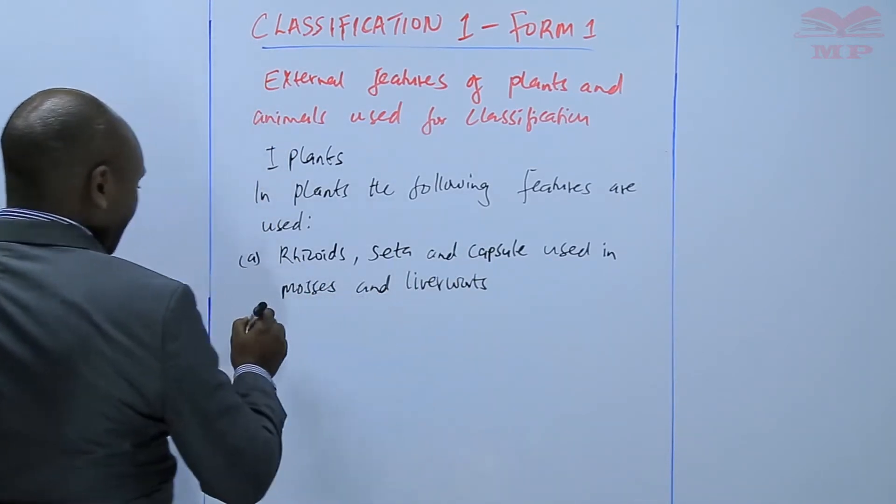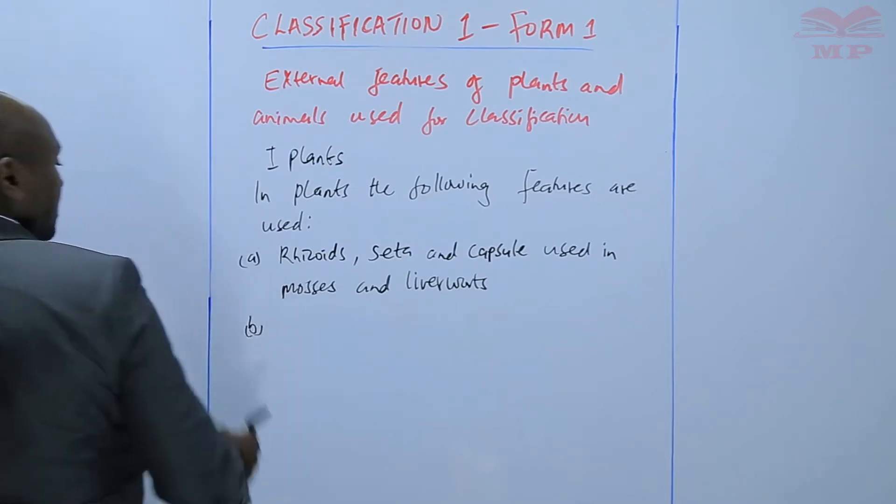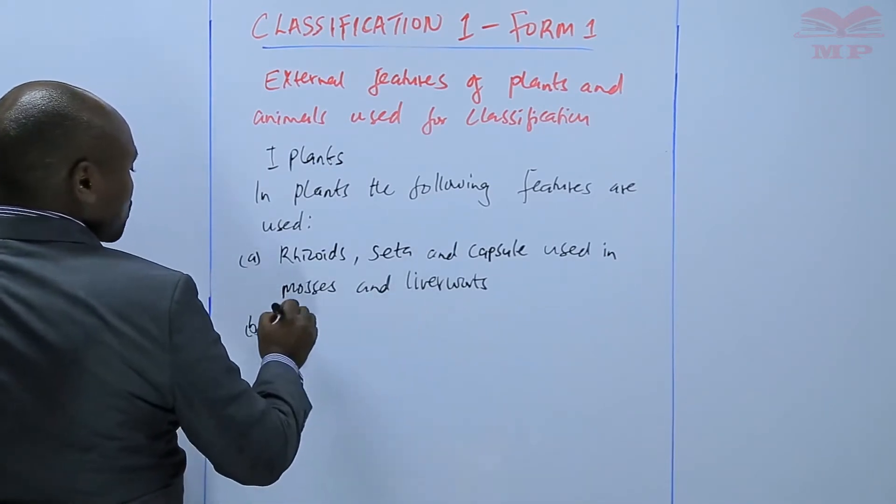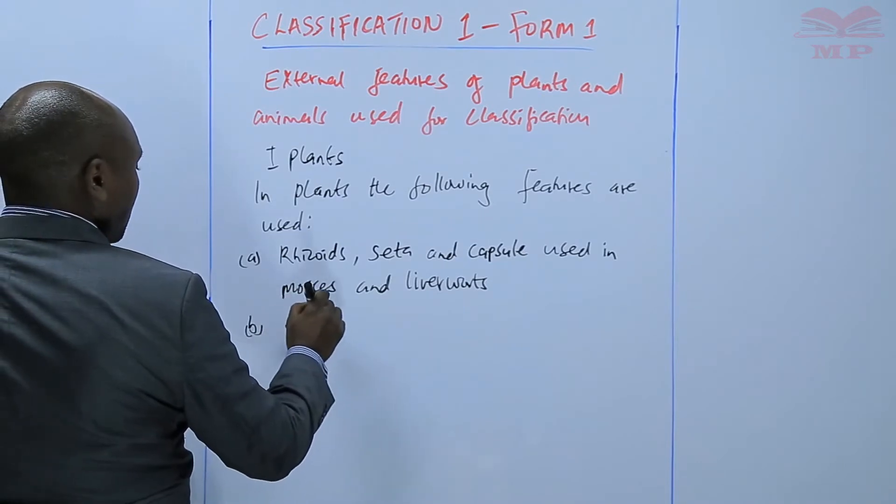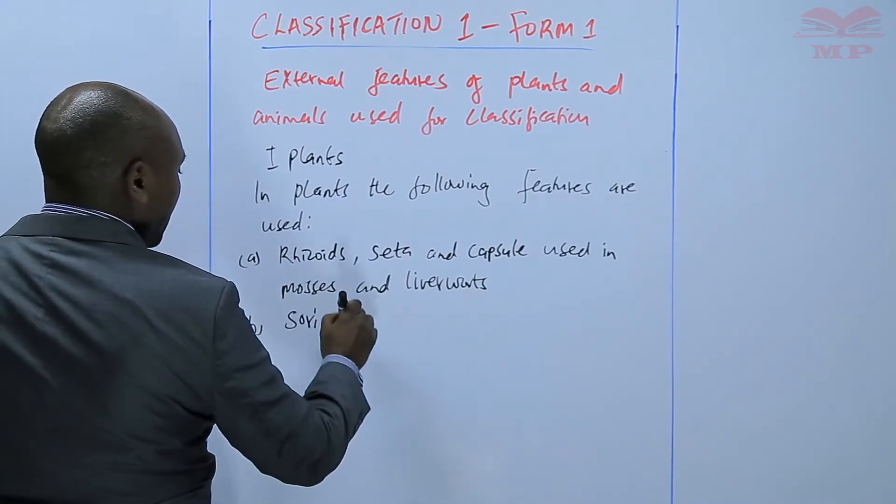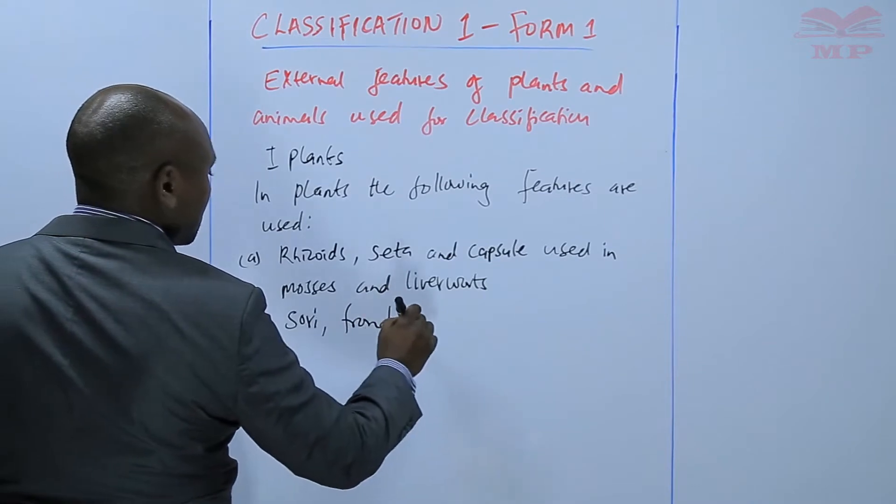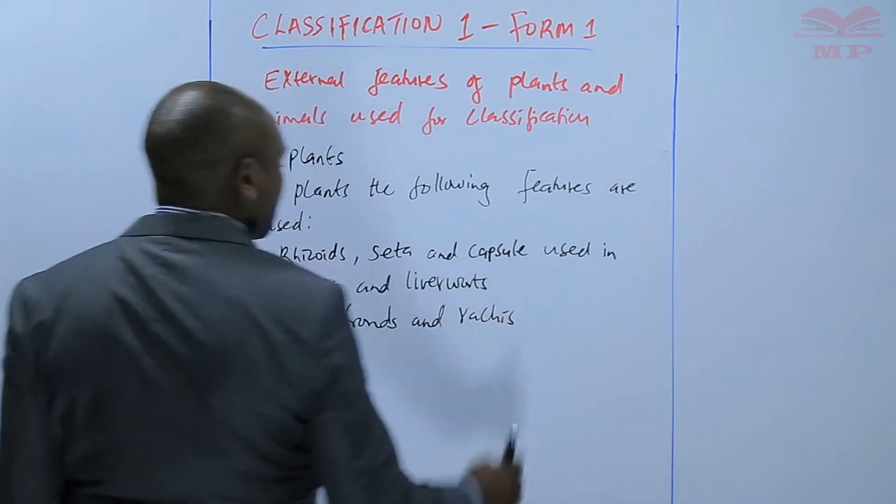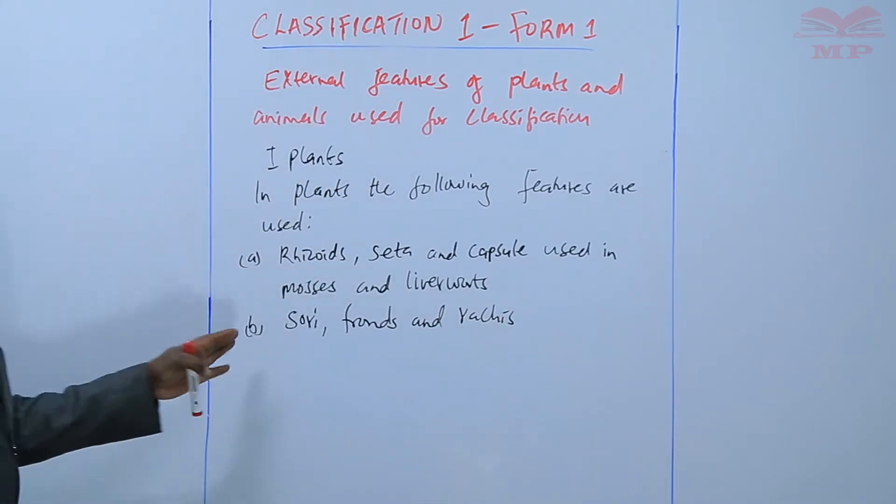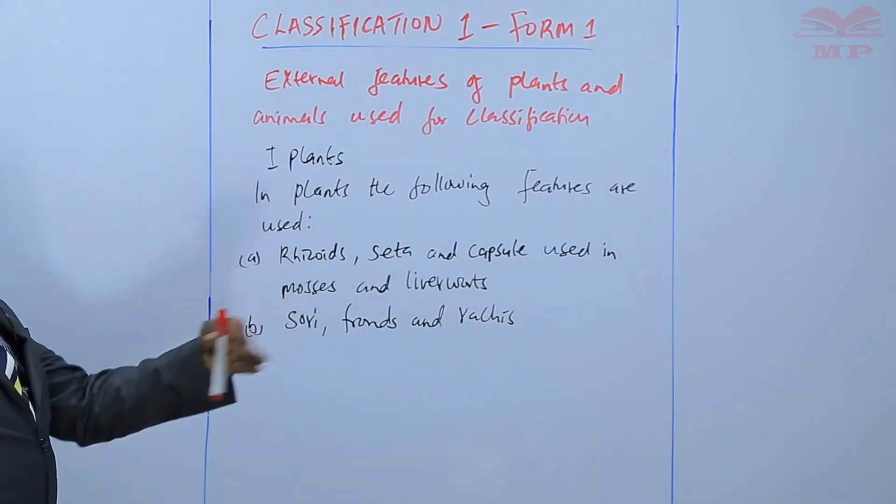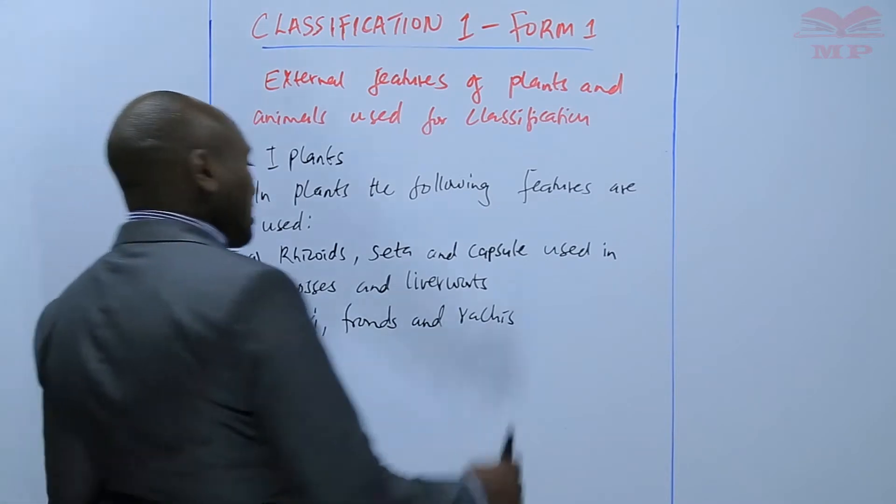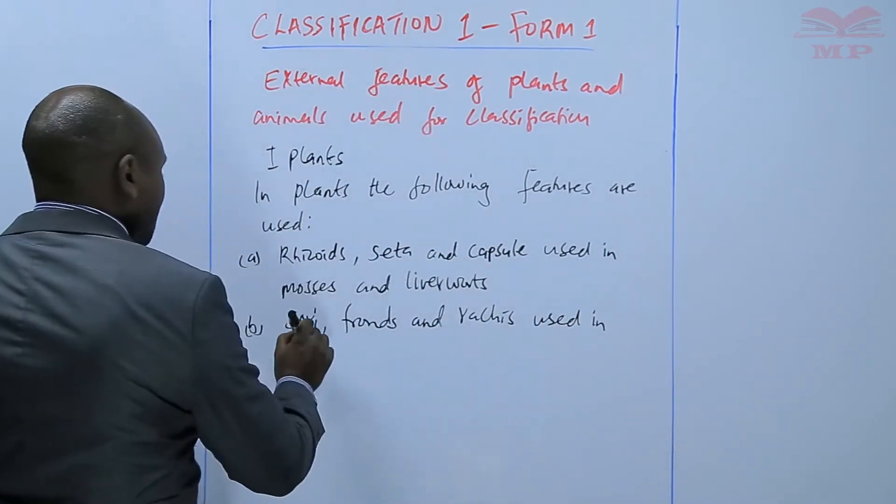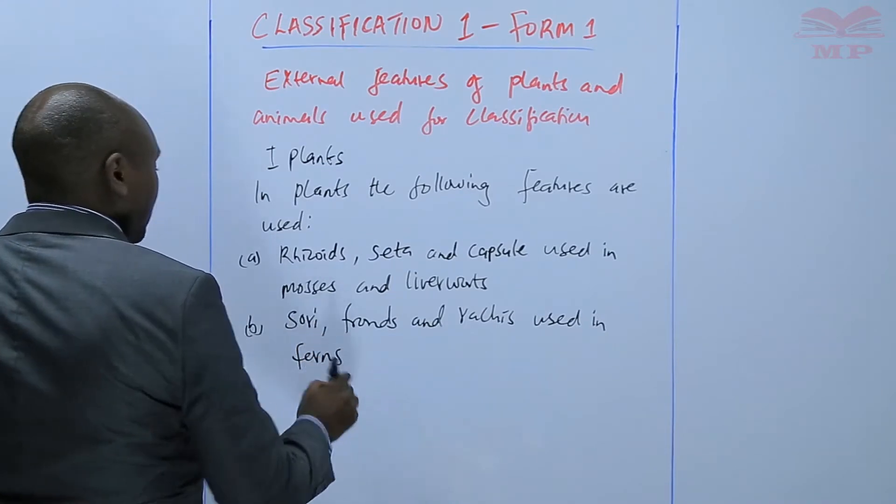If you go to another category of plants, there are some plants that we use structures called the sorai, the frons, and rackies. These are some structures that are found in a little bit more advanced plants such as used in ferns, the fern plants.